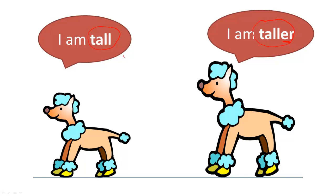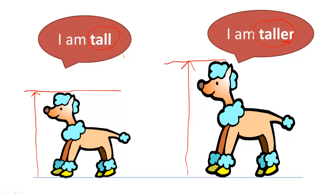When do we use the word tall or taller? Imagine these two dogs are standing on the floor and you look at their height. I draw a line from the ground up to where the first dog's head is — he is quite tall. Now look at the second dog: I draw a line all the way up, and that arrow is much taller than the first. So the second dog on the right is taller, but the first dog is tall.